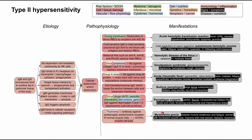Myasthenia gravis occurs when you have antibodies against the post-synaptic acetylcholine receptor of normal muscle cells. It is associated with a thymoma, which may be seen on chest imaging. The result is decreased density of acetylcholine receptors and potentially muscle cell lysis. Patients have weakness and fatigue of the skeletal muscles that worsens with use and improves with rest. More specific symptoms include ptosis, diplopia, and dyspnea if the chest muscles are affected.